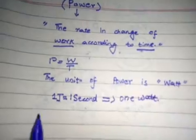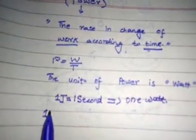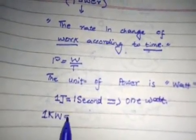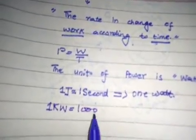One kilowatt is equal to one thousand watts, or 1 kW = 10³ W.